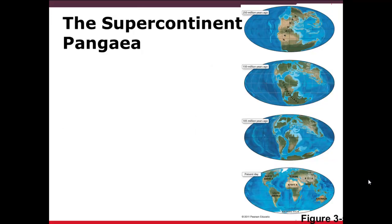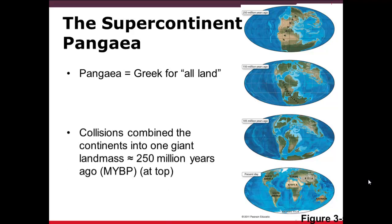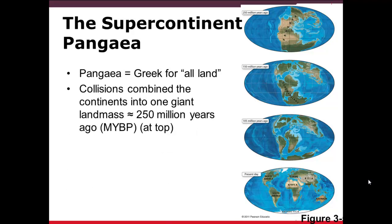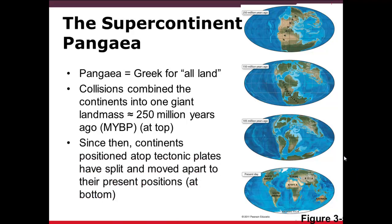He called this supercontinent Pangaea. Pangaea is Greek for 'all land,' and you see in the figure on the right the very top, Pangaea. Collisions would have combined these continents together into one giant landmass approximately 250 million years ago, and then it slowly began to drift apart. Continents positioned on top of tectonic plates split and moved into present positions today. Notice that at approximately 150 million years ago, as shown in the figure on the right-hand side, you see the southern continent of Gondwanaland.